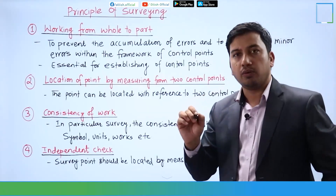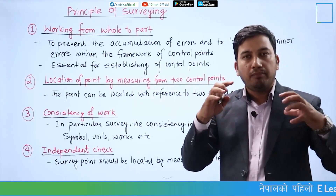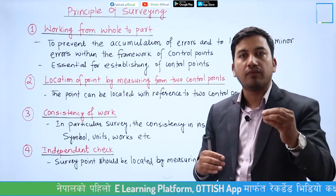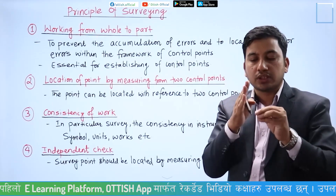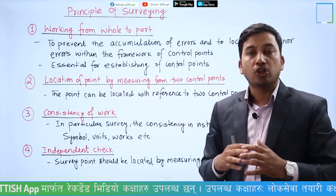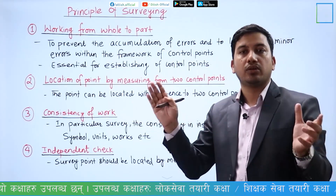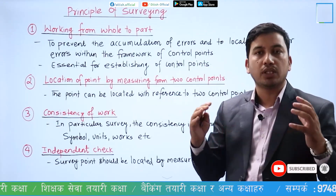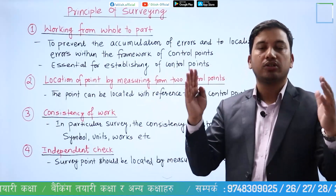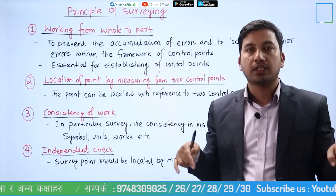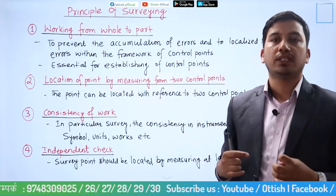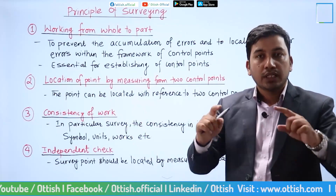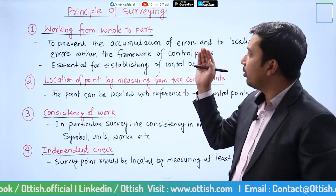Working from whole to part, in the first place you establish major or control points — first order control points — from the survey department. These are high accuracy points: 1st order, 2nd order, and 3rd order control points are established. This is the mechanism — this is the principle of working from whole to part.